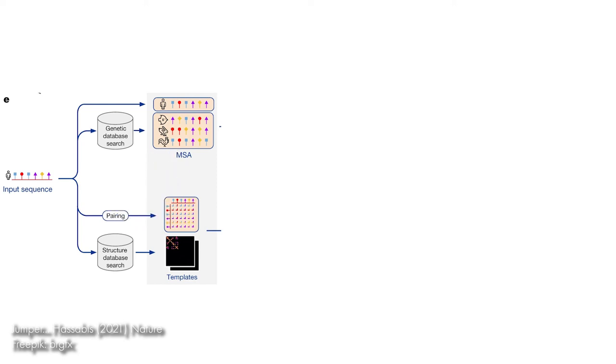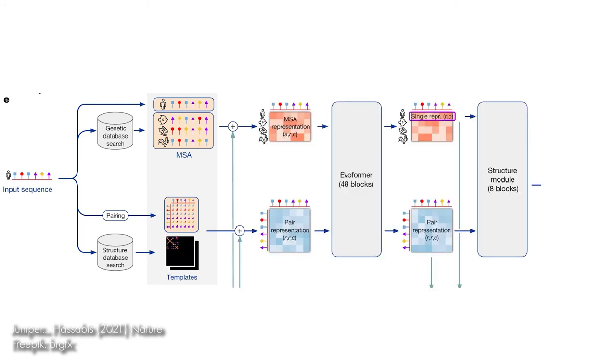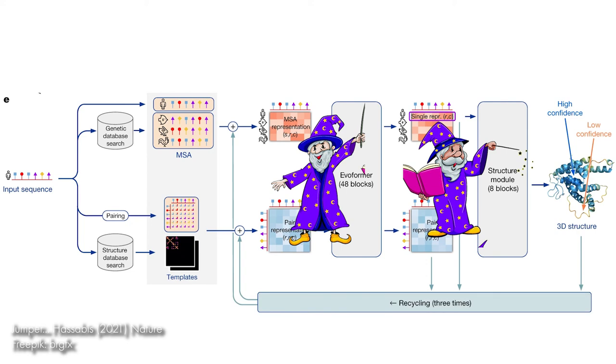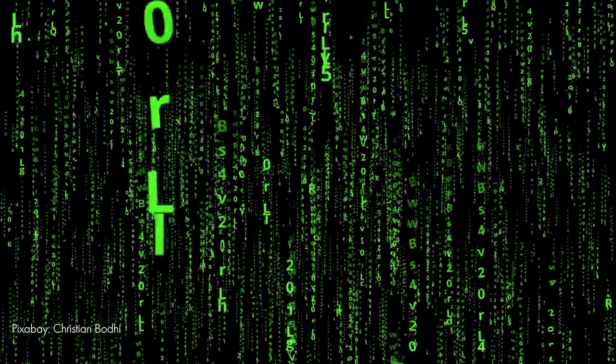It finds similar amino acid sequences and similar structures to the new protein. And using some complex deep learning magic, it combines the information into a neural network to produce a preliminary structure of the new protein. It then iteratively refines this preliminary structure by feeding it back through the neural network a few more times to get a refined structure.